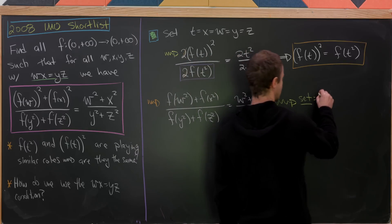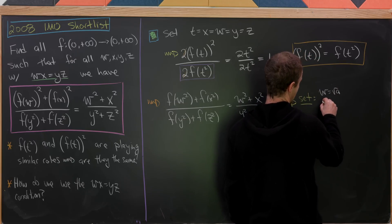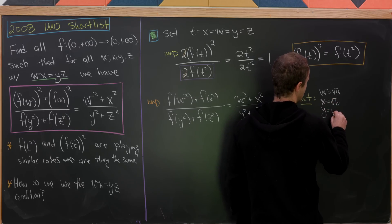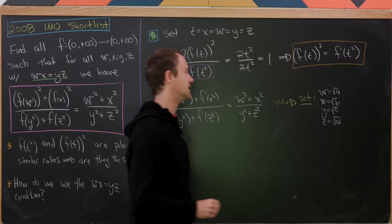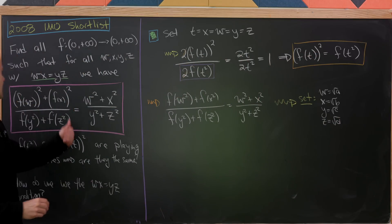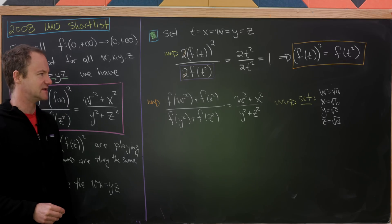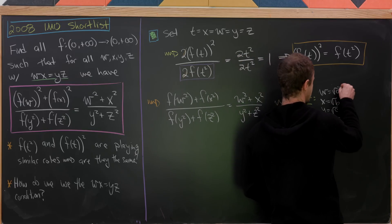So let's be motivated by this view of our new equation to set the following equalities of new variables. We'll set w equal to the square root of a, x equal to the square root of b, y equal to the square root of c, and z equal to the square root of d. And now notice if wx equals yz, then that's the same thing as ab equals cd, just by taking square roots.